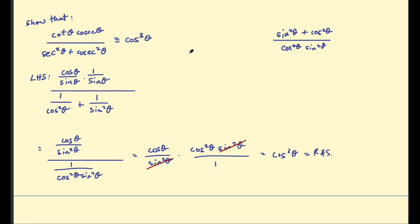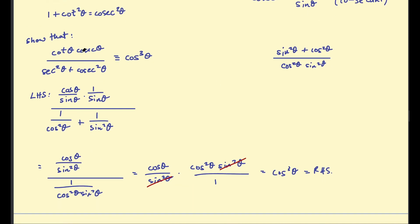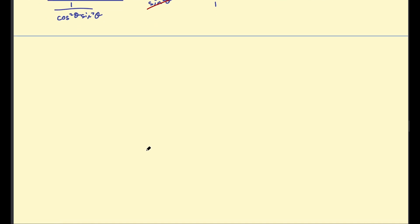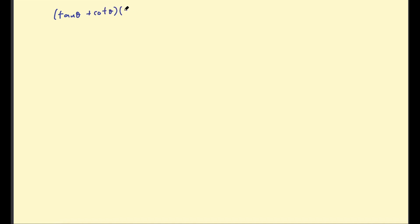That was an example showing that when working with these types of functions, it helps to break them down into cosine and sine and then simplify. Next example: show that (tan θ + cot θ)(cos θ · sin θ + cos θ) is equivalent to sec θ + cosec θ.